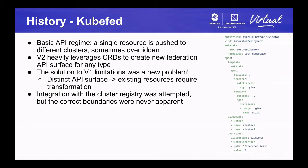KubeFed v2 heavily leverages custom resource definitions to create a new federation API surface for any type. This was a response to one of the shortcomings of v1: since we didn't have CRDs, there was no way to just add a new part of the control plane for a new resource. So we leveraged CRDs to create new API surfaces for any type. If you look at the right-hand corner of the screen, you can see an example of a federated deployment — under spec, there's a template.